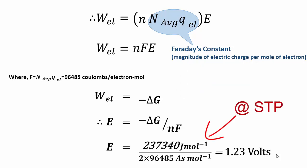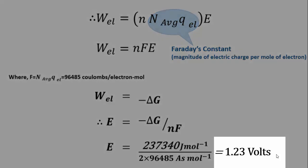If you substitute the value of Gibbs free energy at standard temperature and pressure, you will be left with the cell potential of 1.23 volts, which is the theoretical fuel cell voltage at standard temperature and pressure.